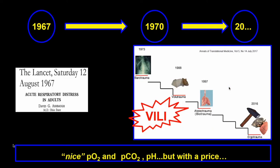It didn't take long to recognize this lung injury — in 1967 we got ARDS, and by 1973 we knew that high positive pressures would result in further lung injury. This is the price we pay for good pCO2, pO2, and pH values: VILI, ventilator-induced lung injury, which encompasses barotrauma, volutrauma, atelectrauma, ergotrauma, and everything in between.